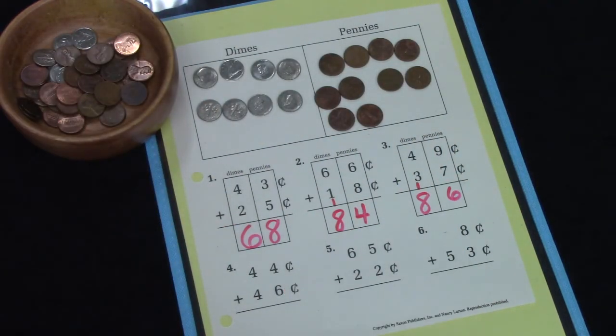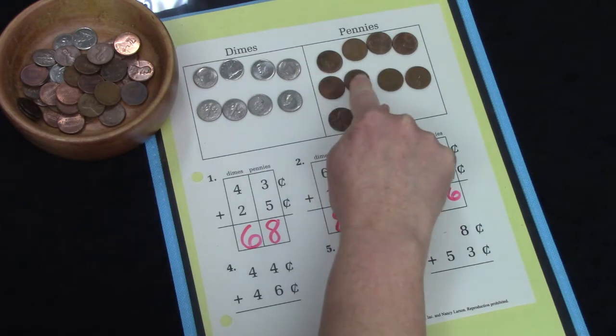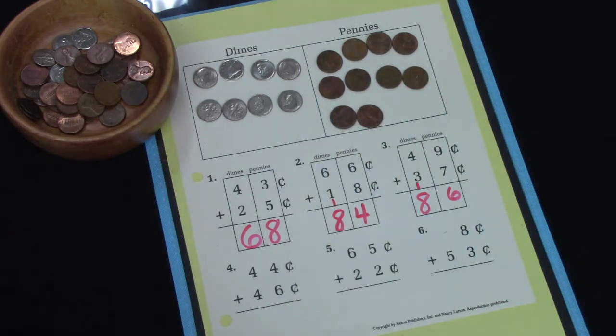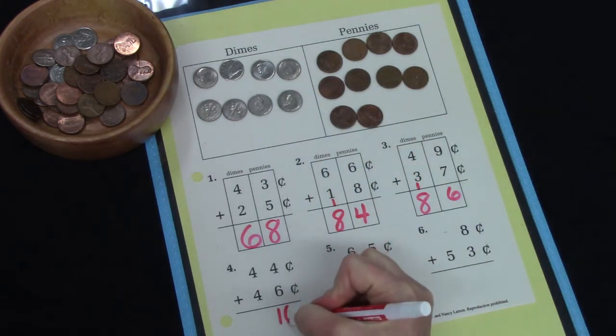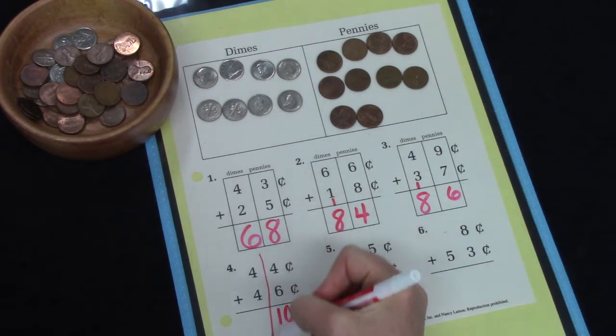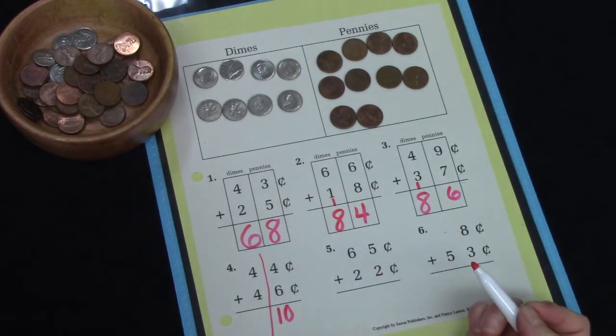4 plus 6. Hmm. Do you see that that makes a group of 10? 1, 2, 3, 4, 5, 6, 7, 8, 9, 10. Well, can we put 10 in this one column? We can't, can we?